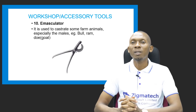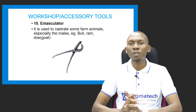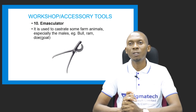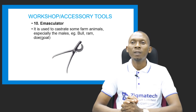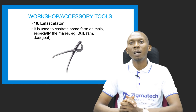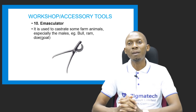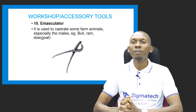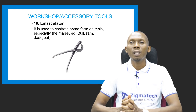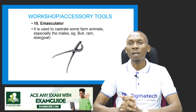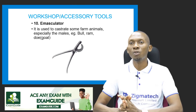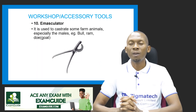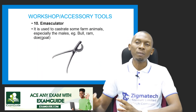The emasculator is another workshop accessory tool used for castrating male farm animals, including the bull, the ram, and the goat. It is the device used for carrying out castration of our male farm animals.